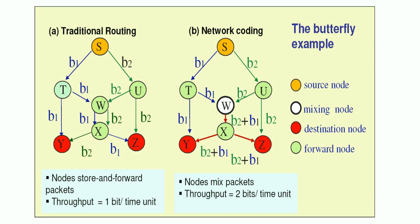This slide shows the difference between traditional routing and network coding using the butterfly diagram. In the case of traditional routing, the source node sends packets to forwarding nodes T and U, which in turn forward the packets to node W. W forwards the received packets to forwarding node X. X spends a certain amount of time to determine which packet goes to which destination, so some energy and time is wasted. In the case of network coding, forwarding nodes T and U forward packets to the mixing node W, where the packets are mixed and sent as one packet to forwarding node X. X forwards these packets to the destination nodes Y and Z, which determine which packet is needed.